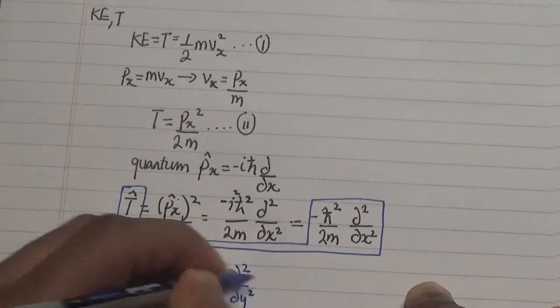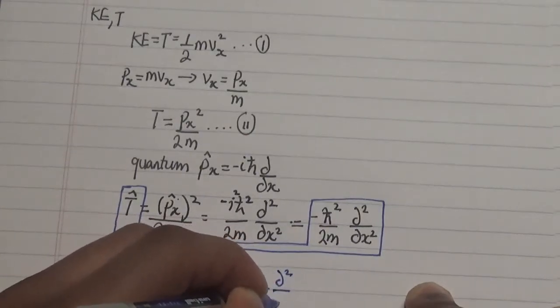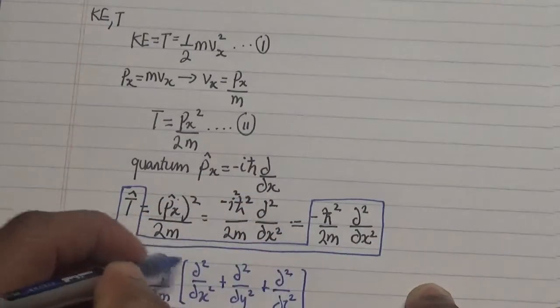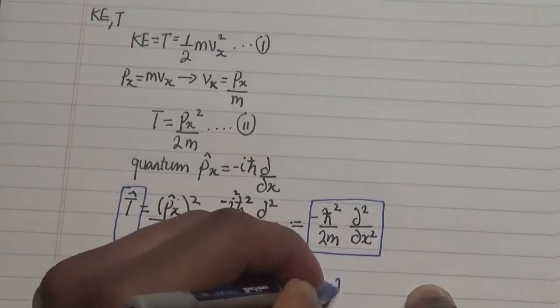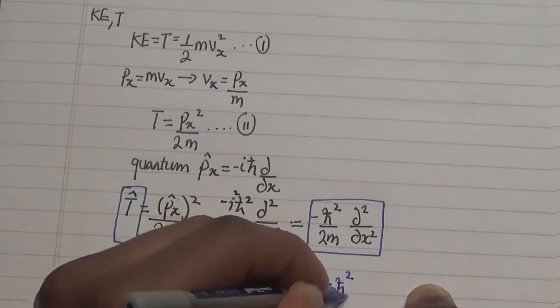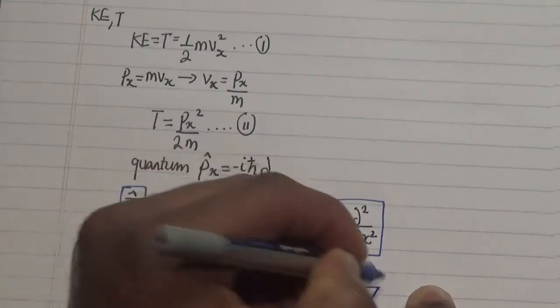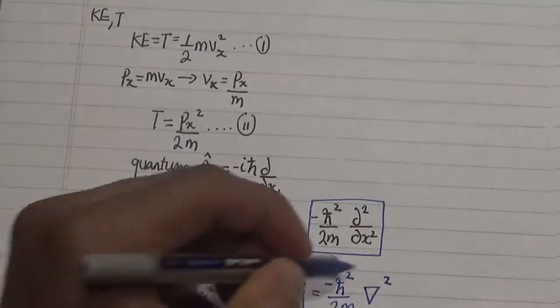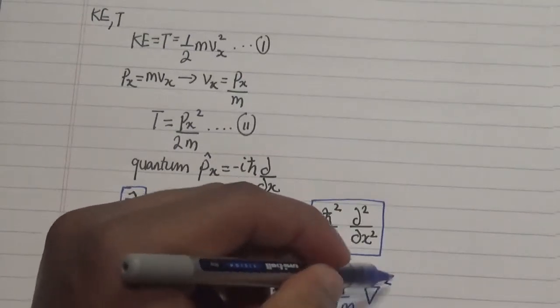∂²/∂x² plus ∂²/∂y² plus ∂²/∂z², and this here is actually equal to negative h bar squared over 2m times the symbol ∇². Now this symbol here is called the Laplace operator and this Laplace operator shows how much the wave function is curving.